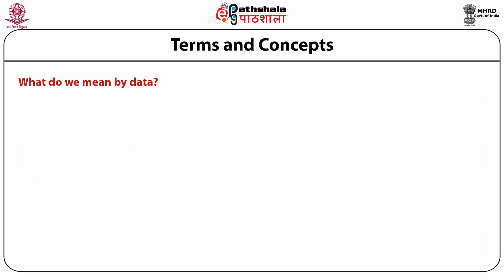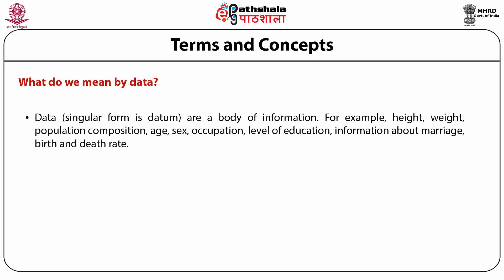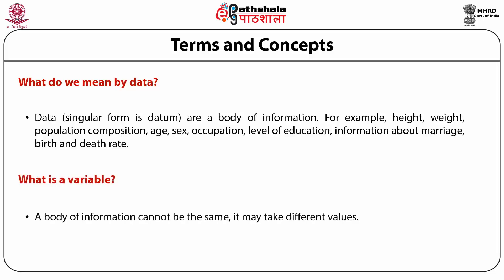Data is a study of information — for example, height, weight, population, body composition, age, sex, occupation, level of education, information about marriage, birth and death rate. A variable is a body of information that may take different values. For example, in a population, height is a variable as it can take any value. Sex is another variable because an individual can be either male or female. Blood group types of individuals may be A, B, AB, or O. Hemoglobin level of individuals may also be different.